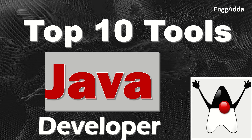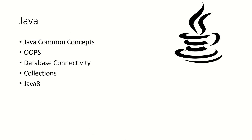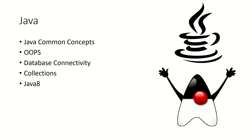The first tool is Java itself. As a Java developer, you should have a command on Java basic concepts, Java OOP concepts, how to connect a Java application to the database, and what is the Java collection framework. Once you master these basics, you should focus on Java 8 features like Lambda expressions, stream APIs, functional interfaces, and date and time APIs.